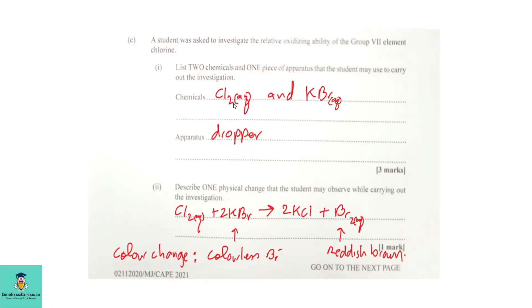The chemicals are aqueous chlorine and aqueous potassium bromide. For the apparatus, you need a dropper.